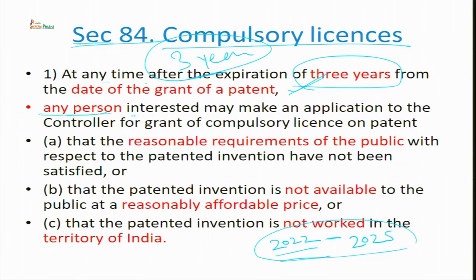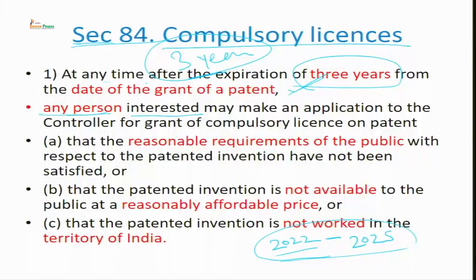Any person interested — there is no bar on who can file for compulsory licensing — may make an application to the controller for grant of compulsory licensing. Whether woman, man, layman, scientist — any person can file, and this also includes a legal person. The controller may grant compulsory licensing when there is a reasonable requirement of the public with respect to the patentable invention that has not been satisfied.